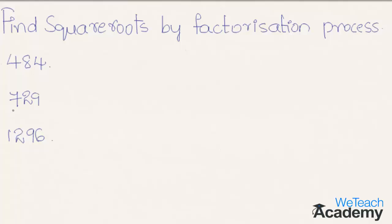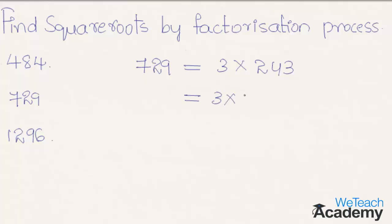Now let us take another example, that is 729. 729 can be written as 3 × 243, which implies 3 × 3 × 81. Here 3 × 81 is equal to 243. Now again we can write this as 3 × 3 × 9 × 9.